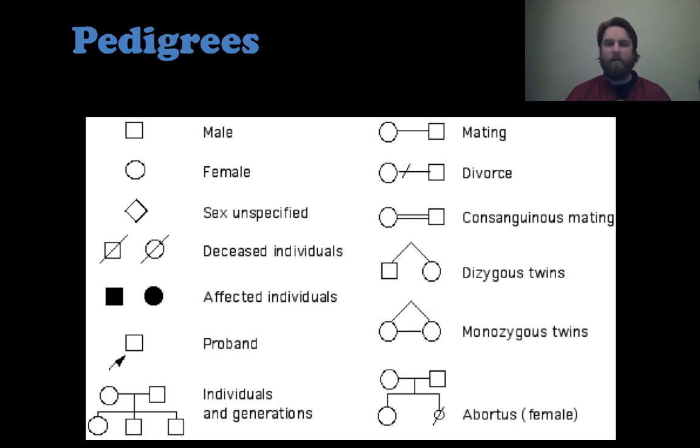Now, the other ones are the two different types of twins. Now, you see twins come off of the same vertical line. If they are dizygotic, that means they are fraternal. If they are monozygotic, meaning they're identical twins, they come off the same line and they then are connected by a horizontal line. So it kind of looks like a triangle there.